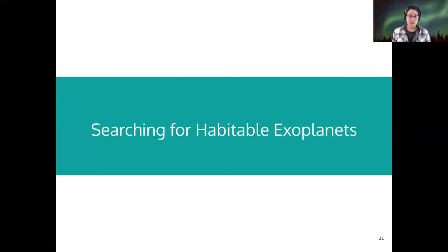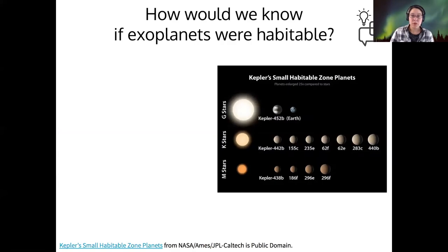All right, so let's talk about our search for habitable exoplanets. We'll build on the ideas of habitability that we already developed. So my question to you is, how would we actually know if a given exoplanet was habitable? What would we hope to be able to measure about such a planet?